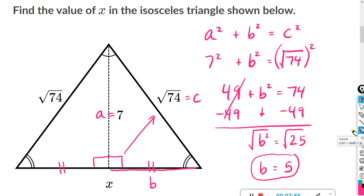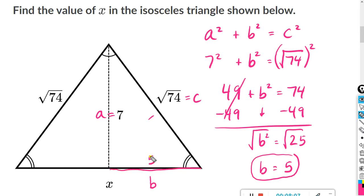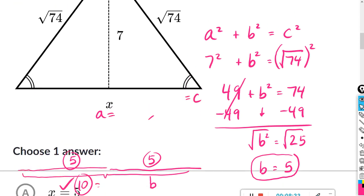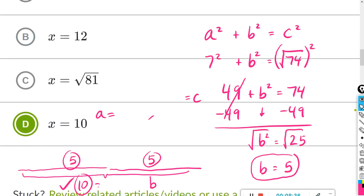They asked us to solve for X, but we solved for B — and B was just this one half of the base. Since the two triangles are congruent, if this half is 5 then this half is also 5. X represents the entire base, so X is just 5 plus 5, which is 10. That's your final answer — look for 10. Answer D.